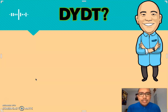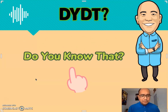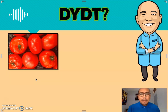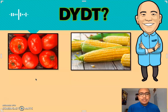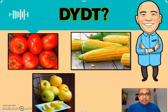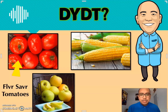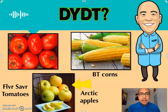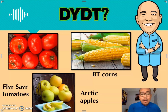Before proceeding to our new lesson for today, let's have a short 'did you know.' I have here some tomatoes, corns, and apples. They are not just the normal apples, tomatoes, and corns that we see in the market or grocery stores. These tomatoes are known as the Flavor Saver Tomatoes, these are what we call BT corns, and these are the Arctic Apples. What is something different about this group of fruits?